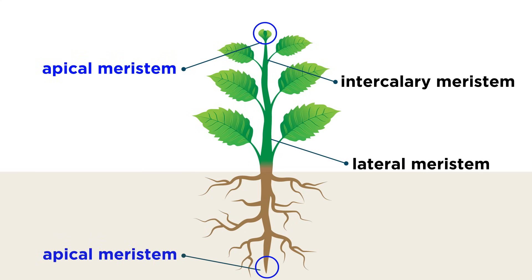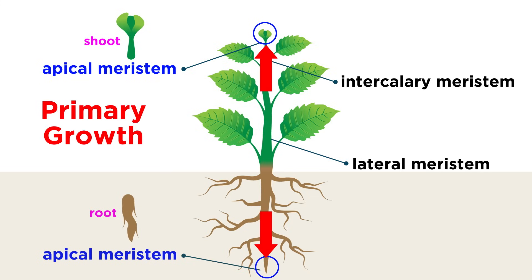Apical meristems are those cells at the apex, or tip, of different parts of the plant. For instance, there are apical meristem cells at the tips of each of the roots, and at the tips of each of the branches and the stem. These apical meristems are responsible for what is known as primary growth in a plant.